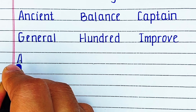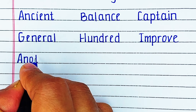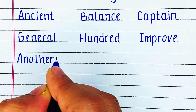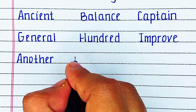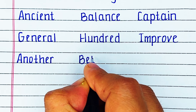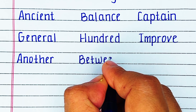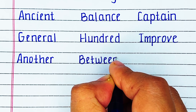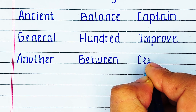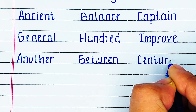Next is Alphabet J. The word is A N O T H E R, another. Next is Alphabet B. The word is B E T W E E N, between. Next is C E N T U R Y, century.